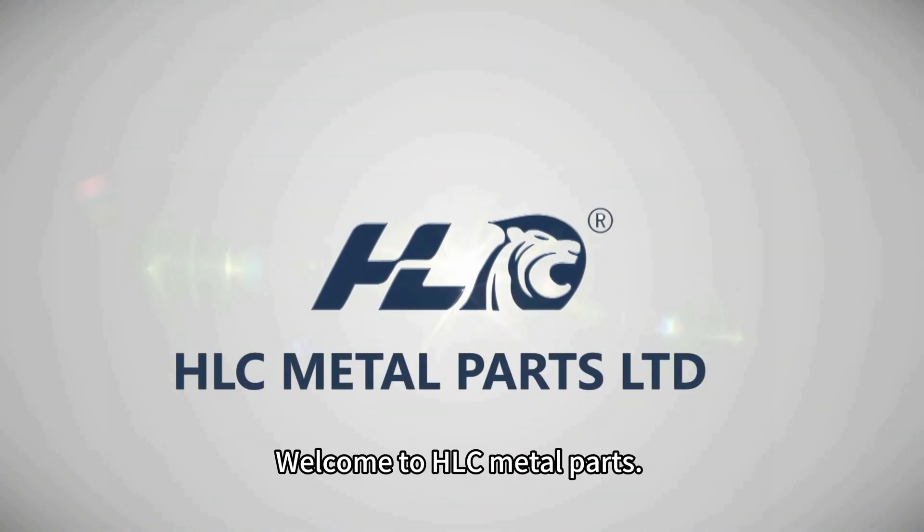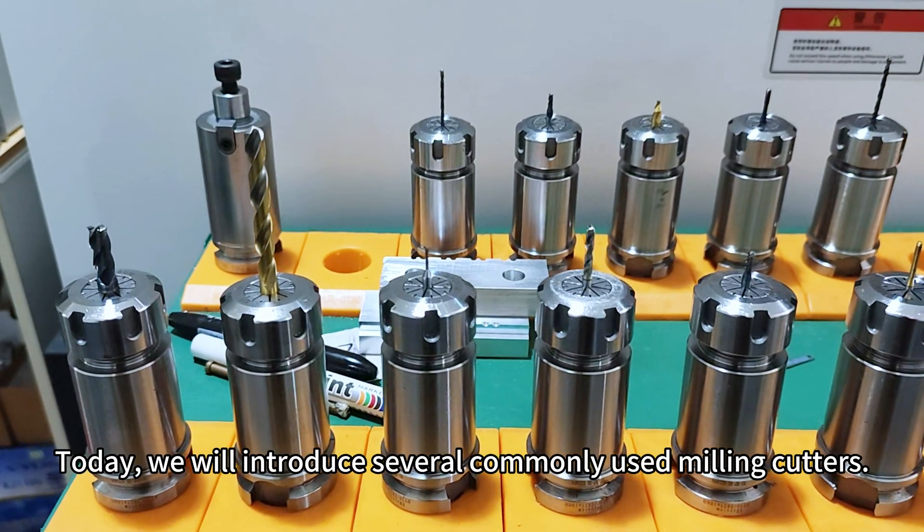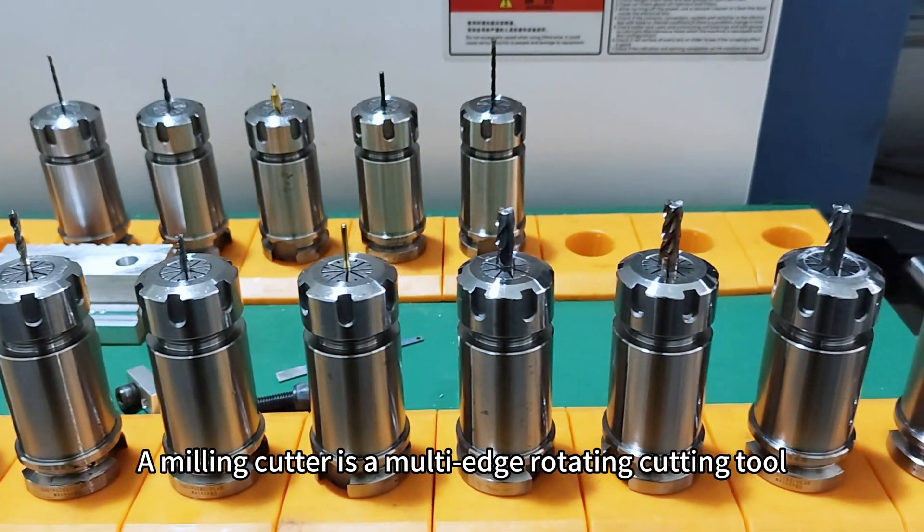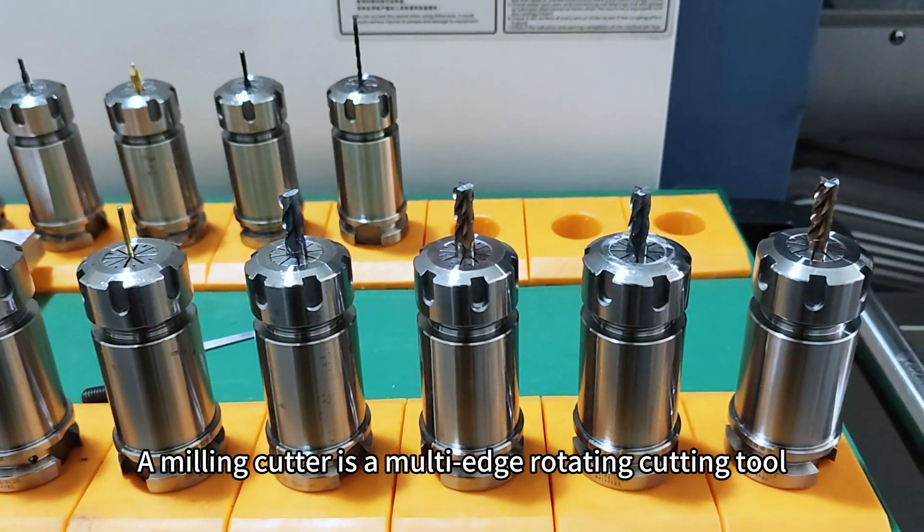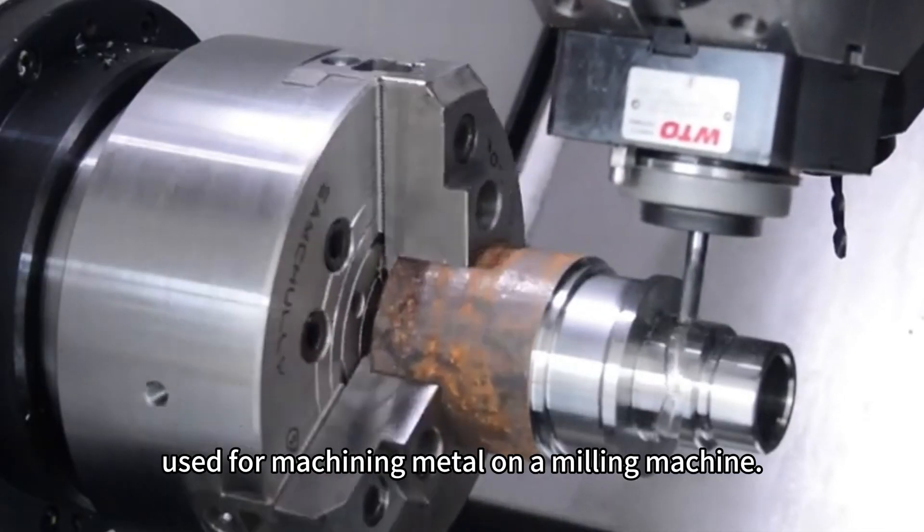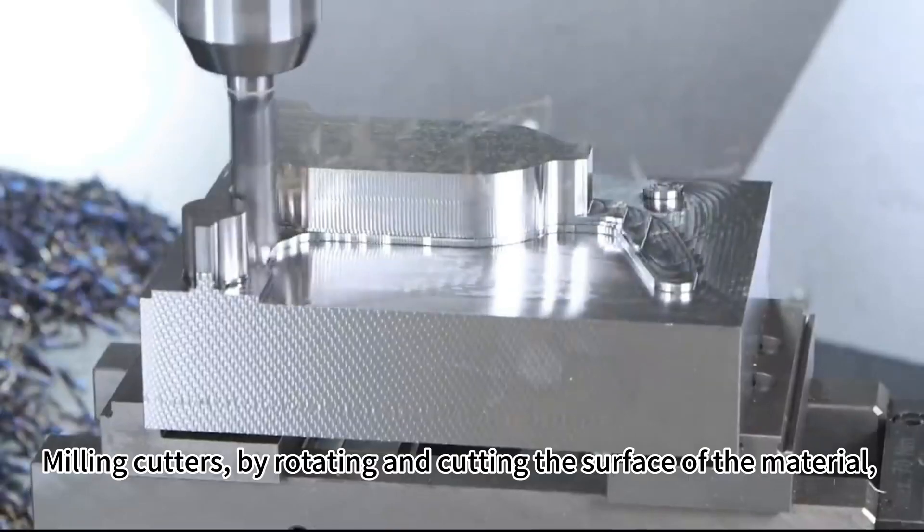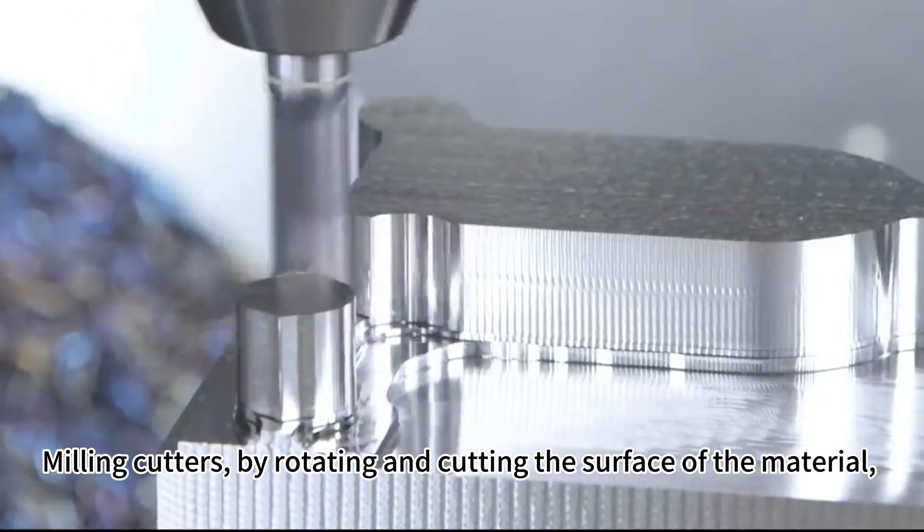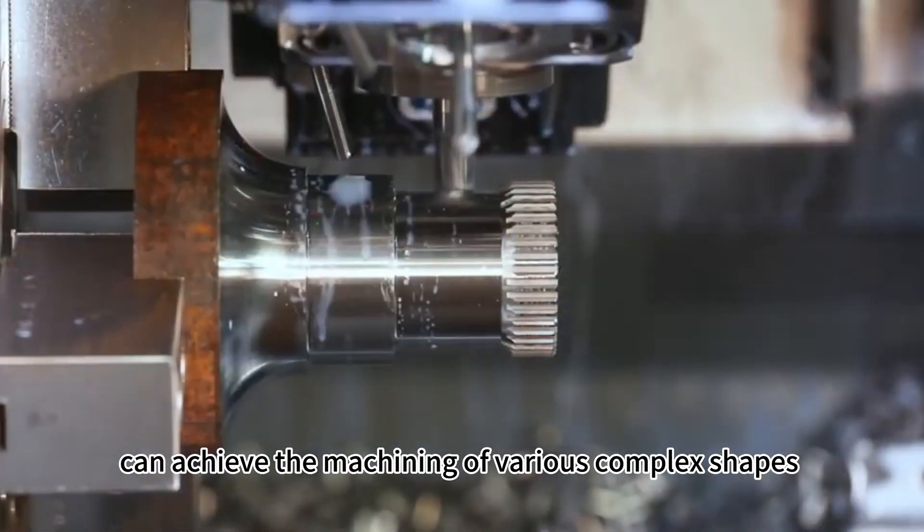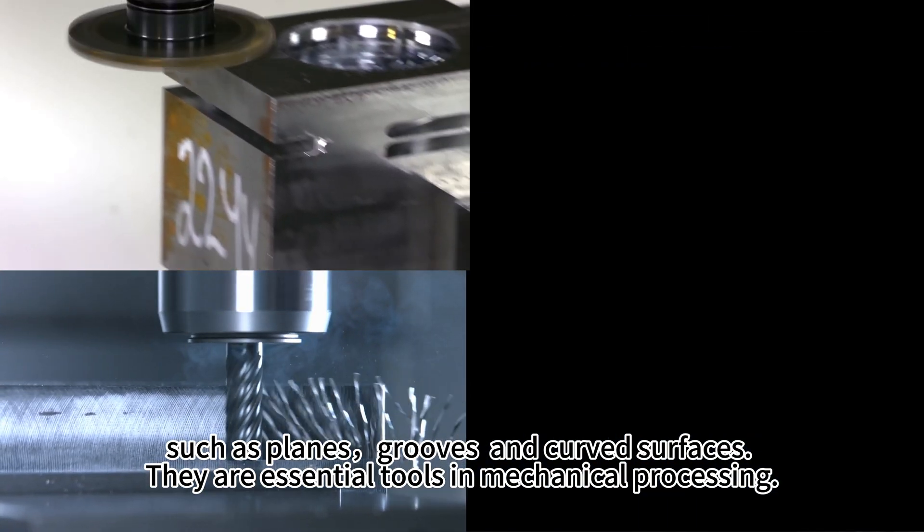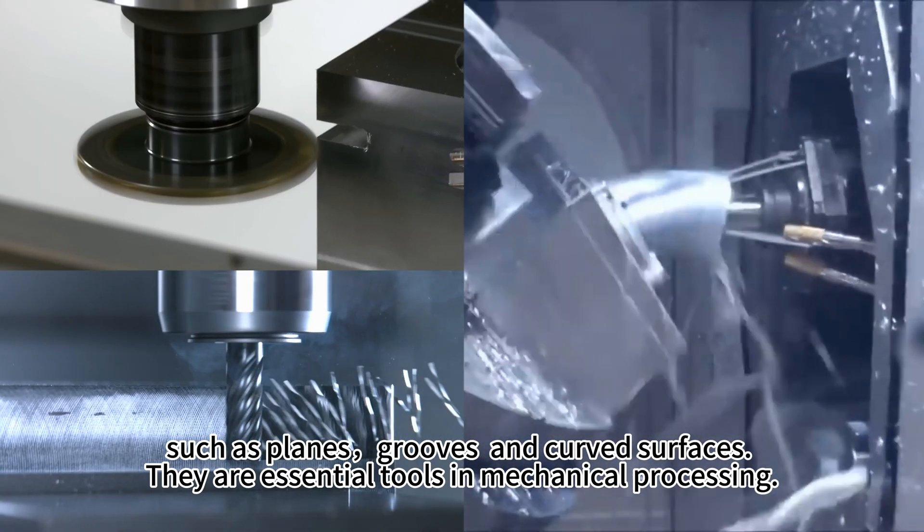Welcome to HLC metal parts. Today we will introduce several commonly used milling cutters. A milling cutter is a multi-edge rotating cutting tool used for machining metal on a milling machine. Milling cutters, by rotating and cutting the surface of the material, can achieve the machining of various complex shapes such as planes, grooves, and curved surfaces. They are essential tools in mechanical processing.